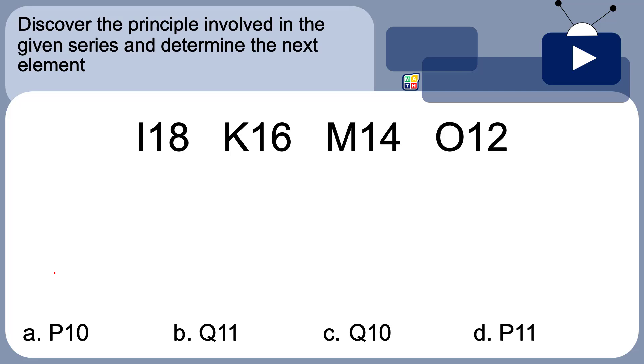Let me get the pen. From I to K, it's actually in alphabetical order. We have skipped here letter J, I, J, and K.